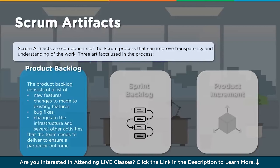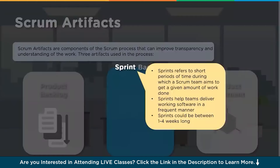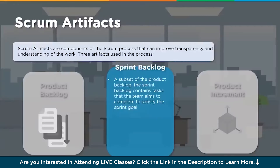As the dynamics of the scenario keep changing, additional items are reprioritized and added to the backlog. The sprint backlog refers to the short period of iterations where the team aims to get a given amount of work done, delivering working software frequently. A sprint can be between one to four weeks long. The sprint backlog is a subset of the product backlog - the prioritized items taken into the sprint, which is a time-boxed iteration.